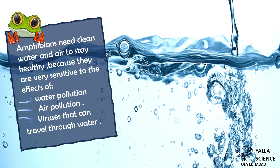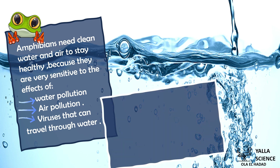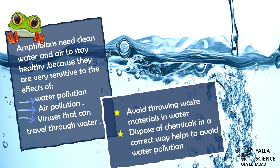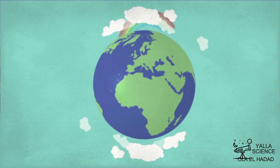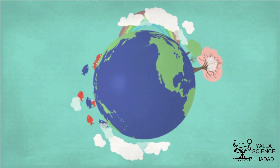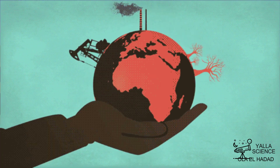Here is some advice to help protect amphibians from extinction: keep the water clean, avoid dumping raw waste materials in water, and dispose of chemicals in the correct way. Some changes in the environment caused by humans are harmful for us.